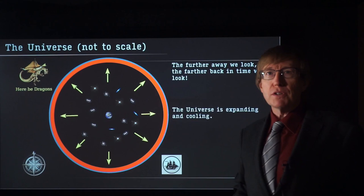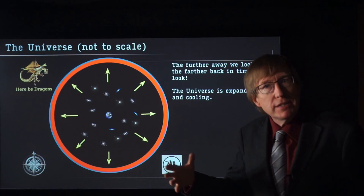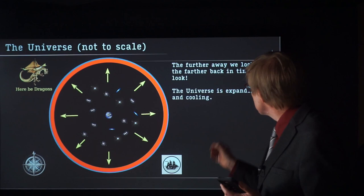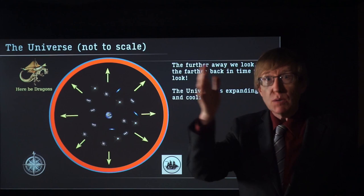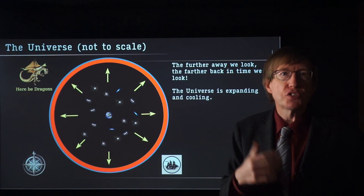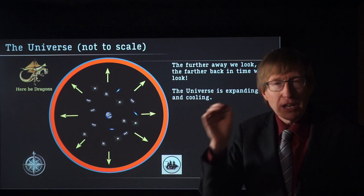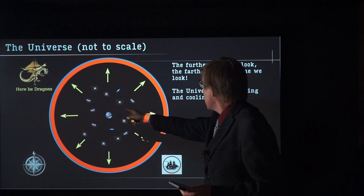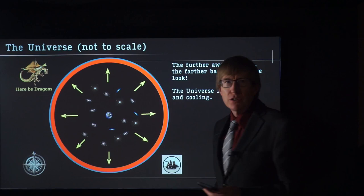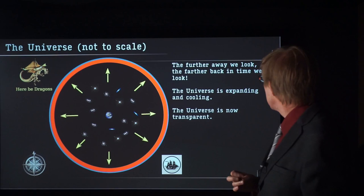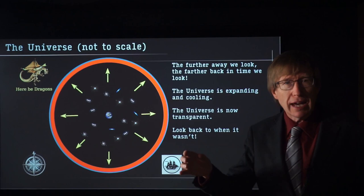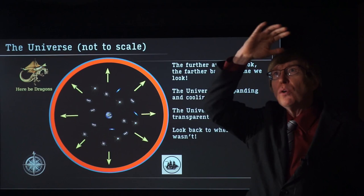The universe is also expanding and cooling. If you take a gas and let it expand, it cools. If you play the tape backwards, in the past the universe was far hotter and far denser. Cold gas is transparent, but if you heat gas up enough, it turns into what's called a plasma — like lightning or the surface of the sun. As we look further and further away, we look further back in time to when the universe was hotter and denser — back before the earliest galaxies, back before there was nothing at all — until we come to the transition from when the universe went from a plasma to a gas.